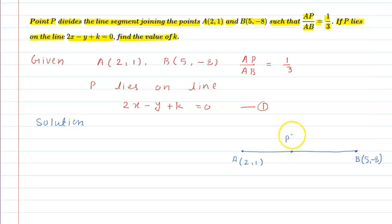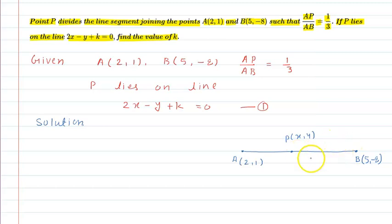We assume the coordinates of P as (X, Y). So once we find the ratio AP to PB from the given information, we can easily find the coordinates of P using the section formula. After finding P's coordinates, we will satisfy them in the given line equation and the value of K will come easily.